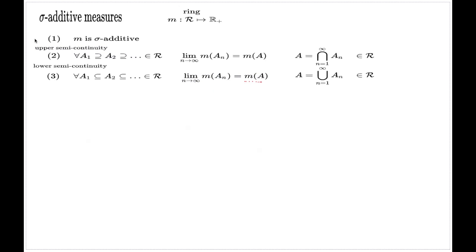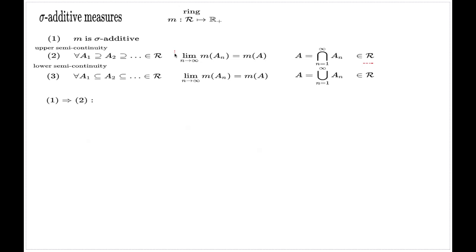When we prove this, we will prove that one implies two, then two implies three, and then three implies one back. That's a typical, very standard way to prove equivalence of a series of statements — a cyclic implication. So first we look at the statement that condition one implies statement two. We assume the measure is sigma-additive, we assume we have a decreasing sequence of subsets, we assume the intersection is an element of the ring, and we show that the limit exists and equals M of A.